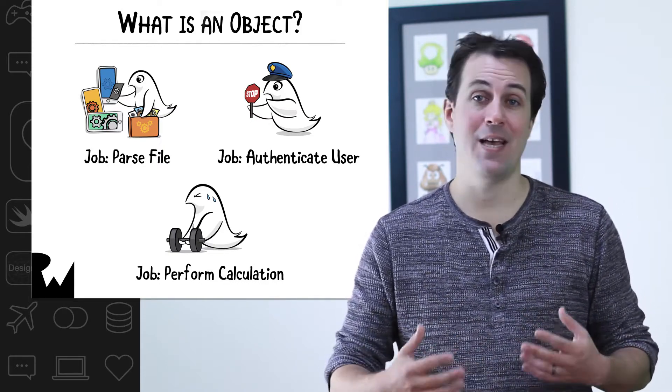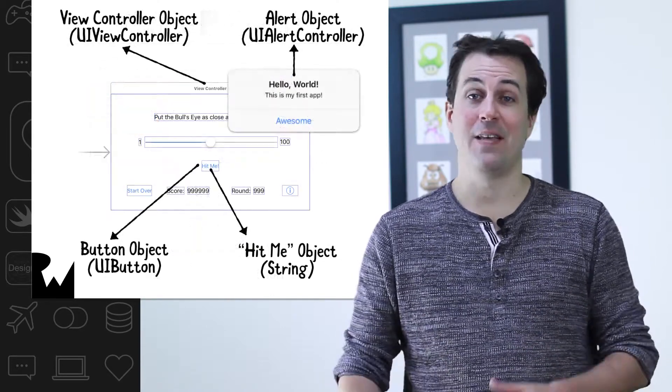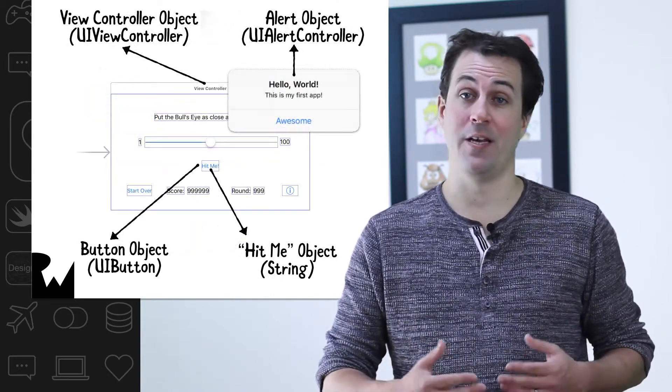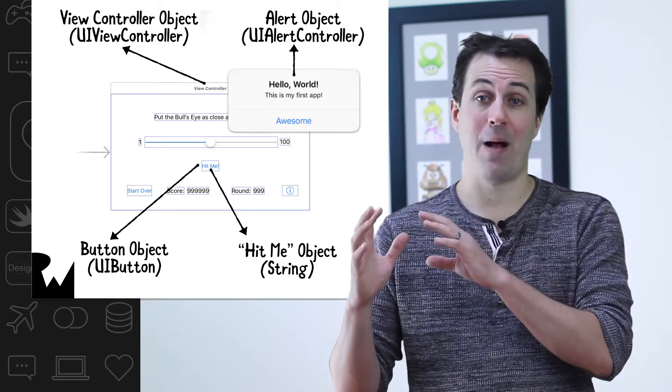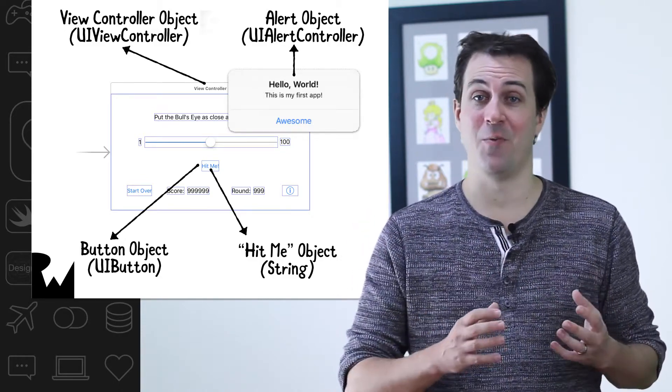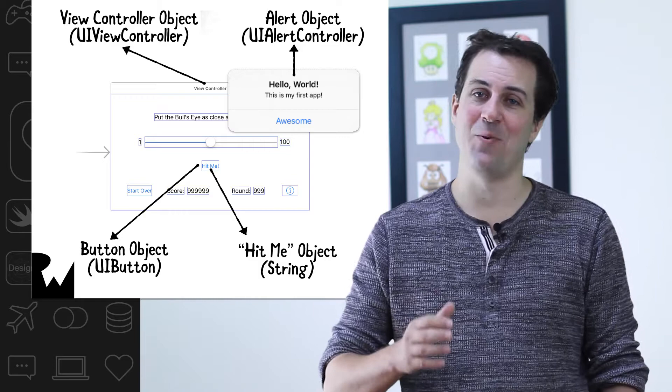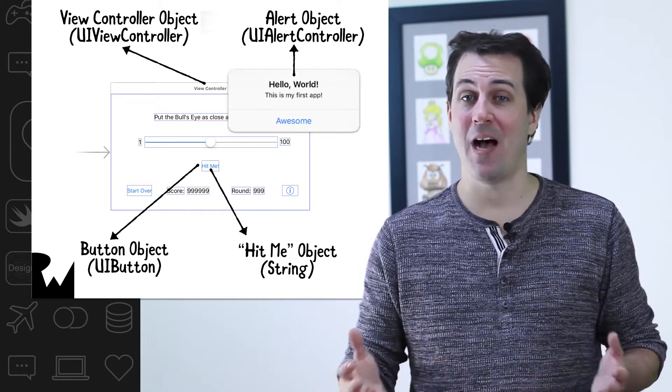In a full-blown app, you'll work with tens or maybe even hundreds of objects. The object you've spent the most time with so far is your view controller. The alert pop-up is also an example of an object, so is the button on the screen, and in fact even the text that you have inside the button is also an object.